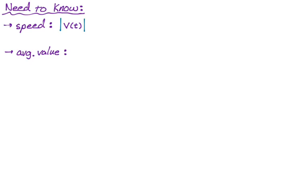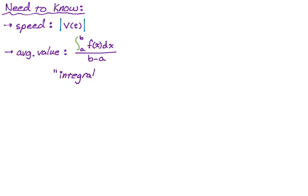The average value of a function can be found by doing the integral of the function — the integral from a to b of f(x) dx — over b minus a. What I usually say is that we're doing the integral over the interval, so 'integral over interval' is a quick way to remember the average value of a function.